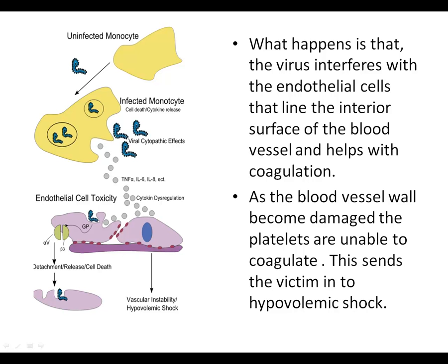The virus interferes with the endothelial cells that line the interior surface of blood vessels, which helps coagulate blood. As the virus interferes with these cells, your cells that stop coagulation are deteriorated, meaning red blood cells are seeping into your other organs and seeping out of your organs, thus you would be bleeding out. The blood vessels become damaged and the platelets are unable to coagulate, and this sends a victim into hypovolemic shock, which is the majority cause of death from the Ebola virus.